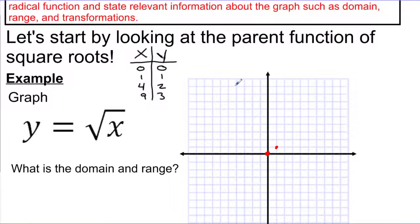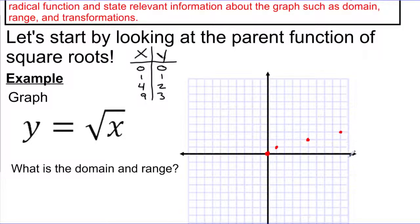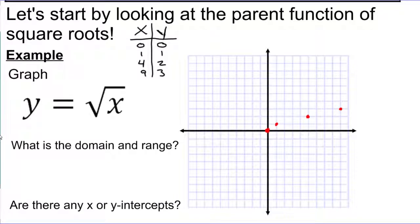Let's graph these points. We have (0,0), (1,1), (4,2), and (9,3). We can keep going — 16 would go up to 4. So that gives us a good shape for our graph.